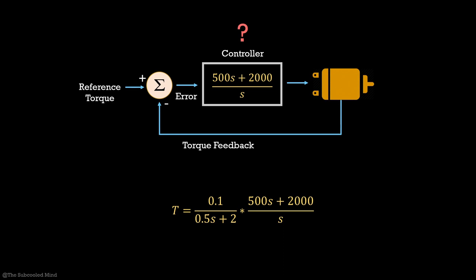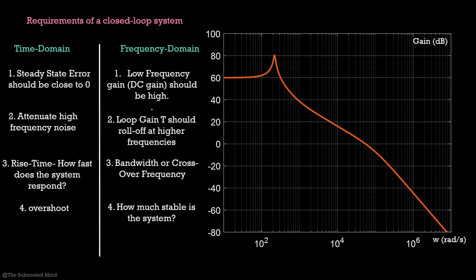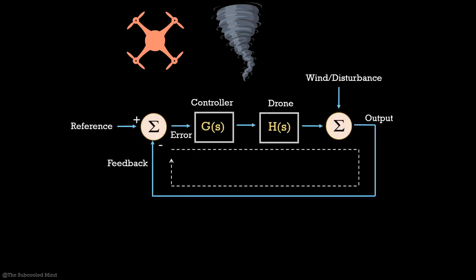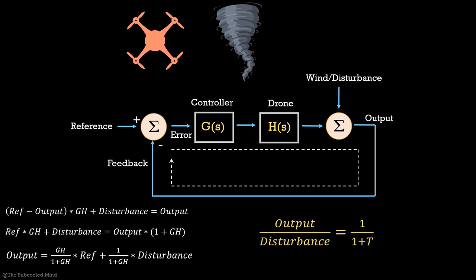We also skipped another requirement of a control system. The fifth requirement is it should be able to reject disturbance. Let us take the example of a drone. There might be a sudden gust of wind that will act as a disturbance in the system. We should be able to counter this disturbance. But how do you define it quantitatively? First, let us add this disturbance to our output in the closed loop system that we earlier saw. And now, we will find the output to disturbance transfer function. And it turns out that it is equal to 1 upon 1 plus T. Pause here to take a look at these calculations.